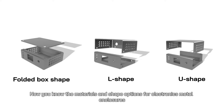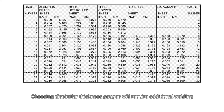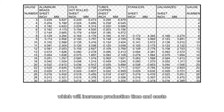First, it is important to maintain uniform wall thickness in an enclosure design. Sheet metal enclosures are usually manufactured from a single metal sheet. Different metal materials have different thickness gauges. Choosing dissimilar thickness gauges will require additional welding, which will increase production time and costs.